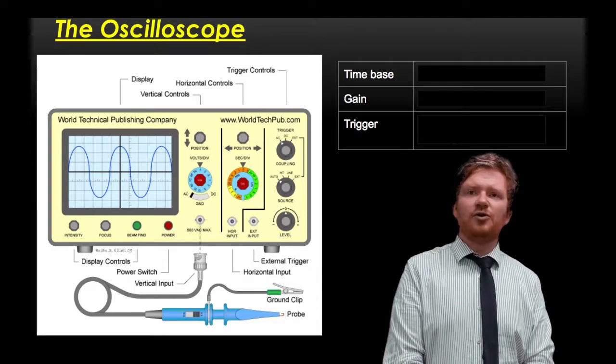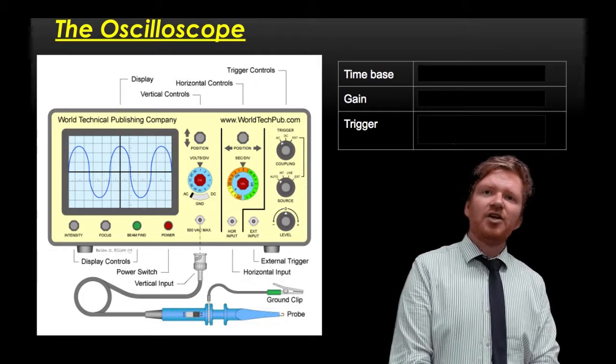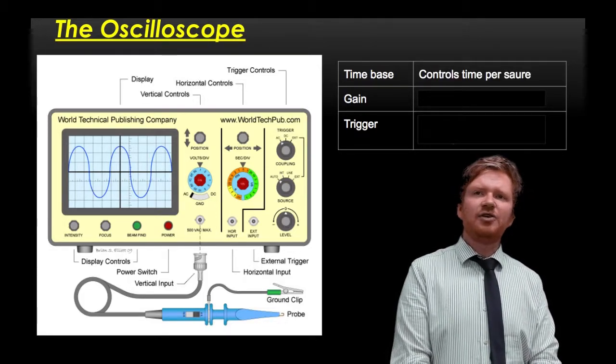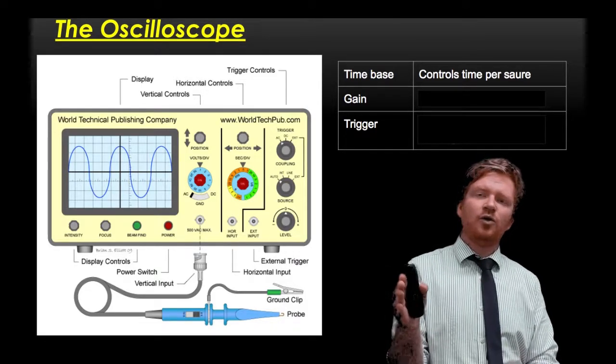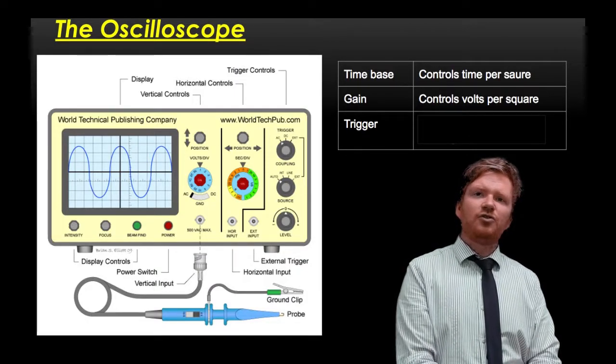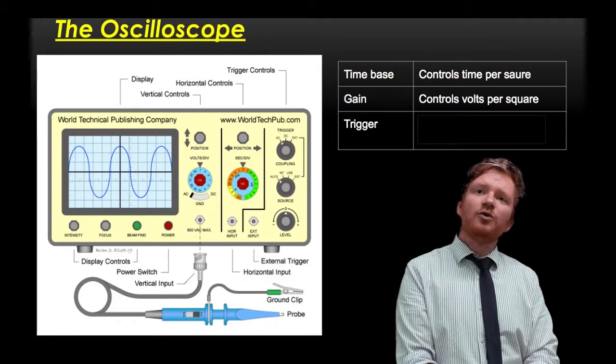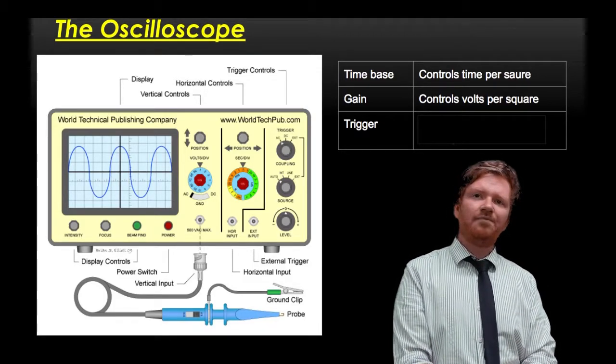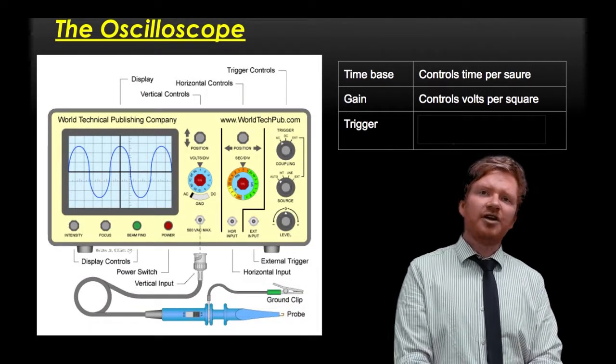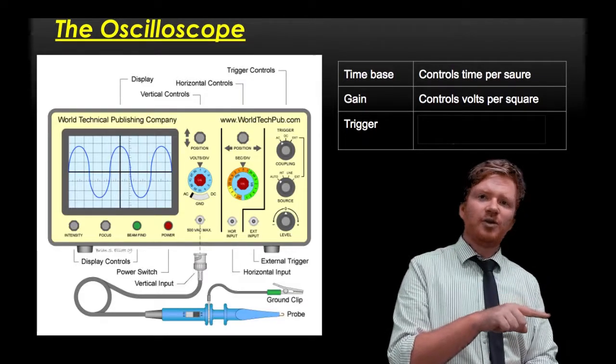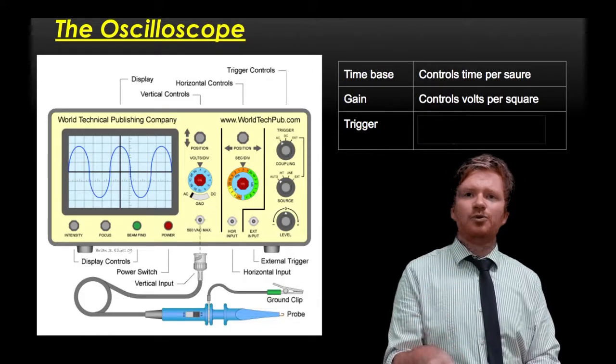How do we do that? There are three controls that you need to know for an oscilloscope. The first one is the time base. The time base controls the time per square, the number of seconds that each square along the x-axis takes up. You also need to control the gain. The gain controls the y-axis - how many volts take up each square. And then there's a trigger. The trigger tells the oscilloscope when to start drawing the wave. You'll see in the lab why this is important.